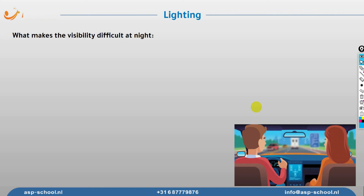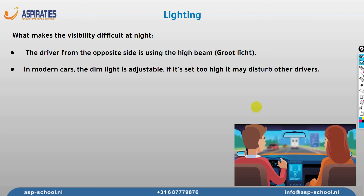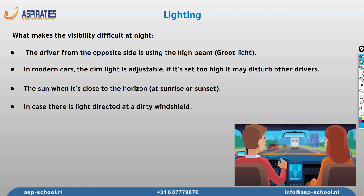Now let's discuss things that make visibility poor at night. A driver from the opposite side using high beams will be very disturbing and make it hard to see the road clearly. In modern cars, dim light is adjustable — if set too high it disturbs other drivers just like a high beam. Also, the sun during sunrise or sunset on the horizon makes it difficult to see clearly. Additionally, driving with a dirty windshield causes incoming light to scatter and focus through clean areas, creating further disturbance.